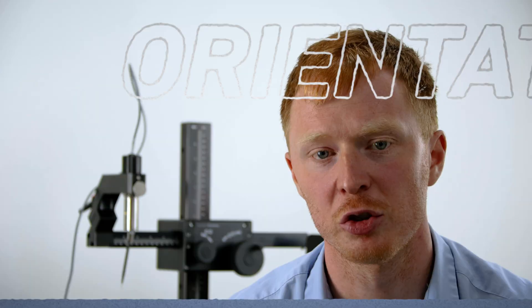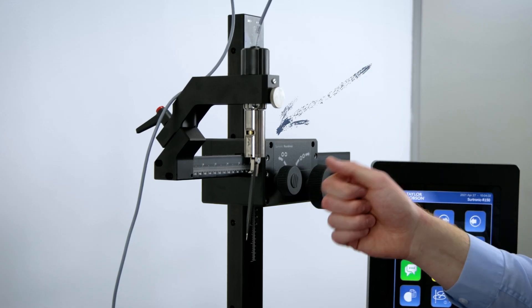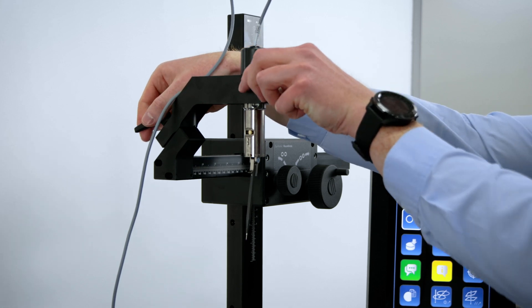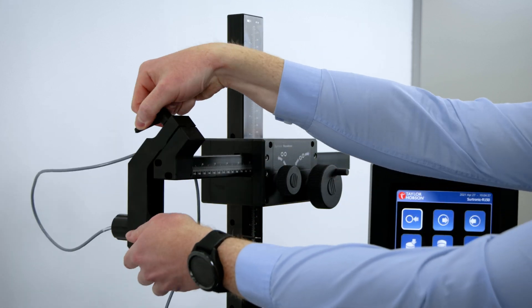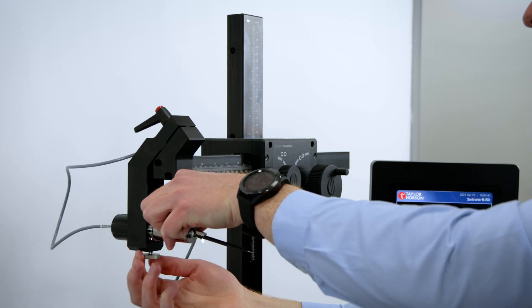An important aspect of the instrument is the ability to orientate the gauge quickly and easily. Now we're going to take a look at just how easy it is to do this. As you can see, we're in vertical mode. To go to horizontal, we do this, and now I'm in flatness mode.